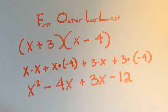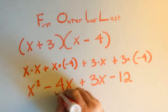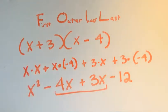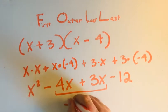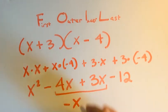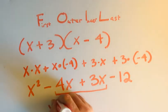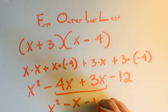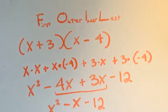So I combine my like terms. Right here I have a negative 4x plus 3x, that's negative x, or negative 1x. Bring down my x squared, minus 12. So the final answer to x plus 3 times x minus 4 is x squared minus x minus 12.